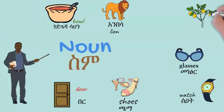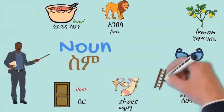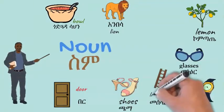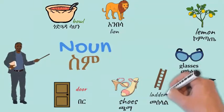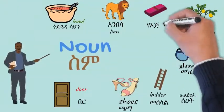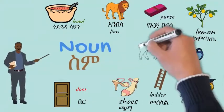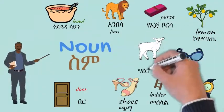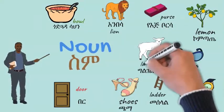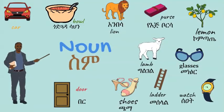A lemon — loamy, comtate. A ladder — masala. A purse — yaj borsa. A lamp — gilgal. And the car — makina.